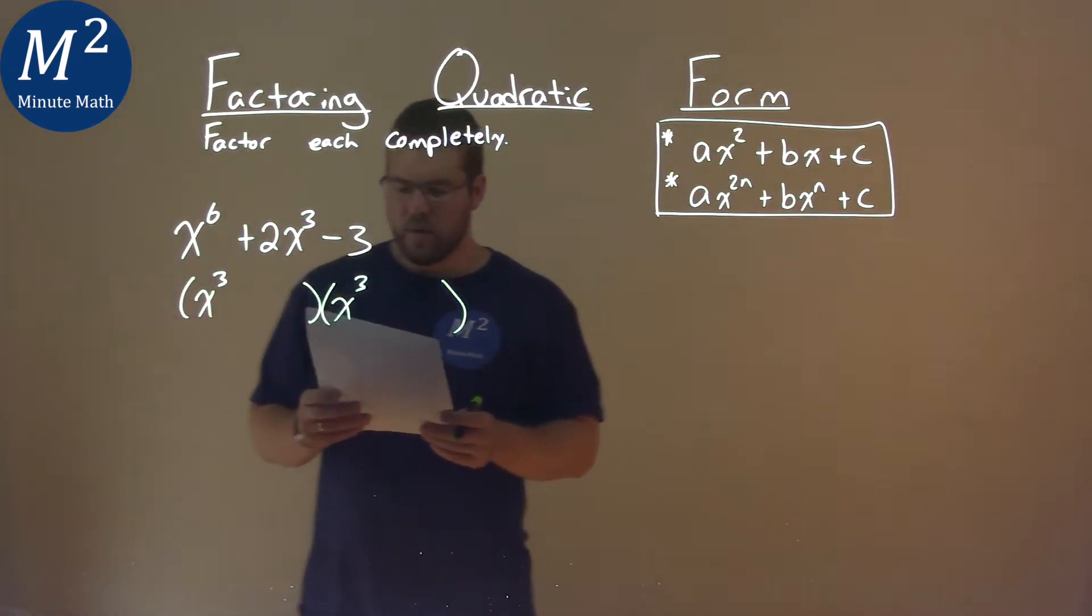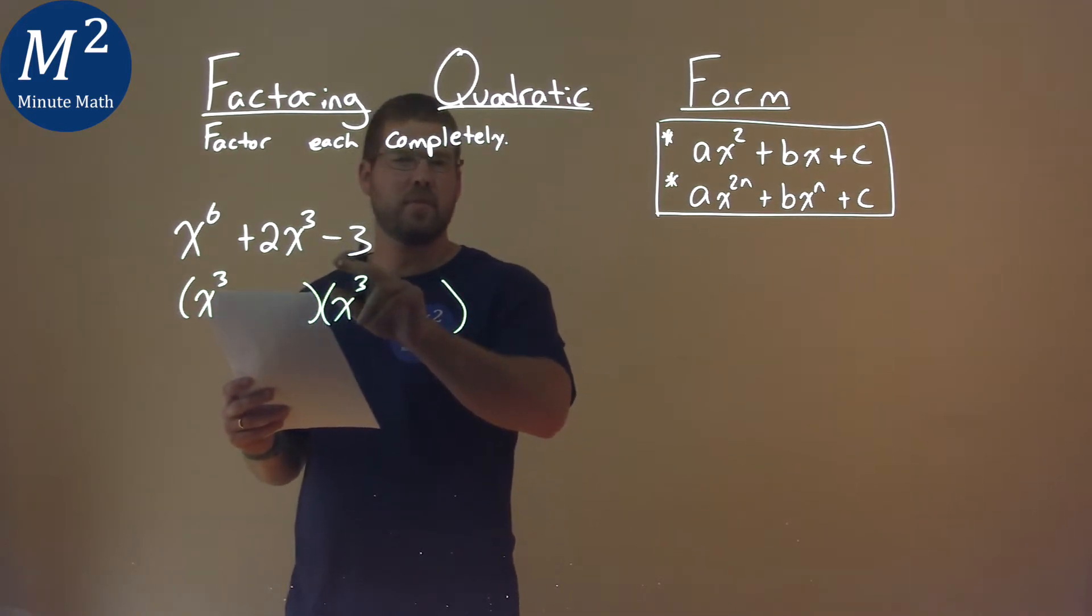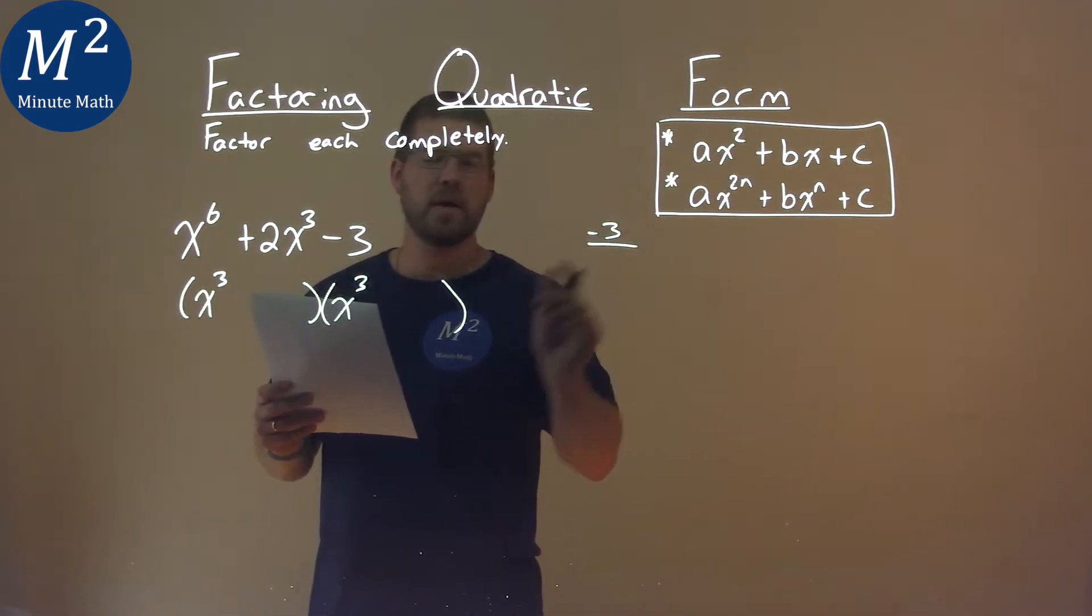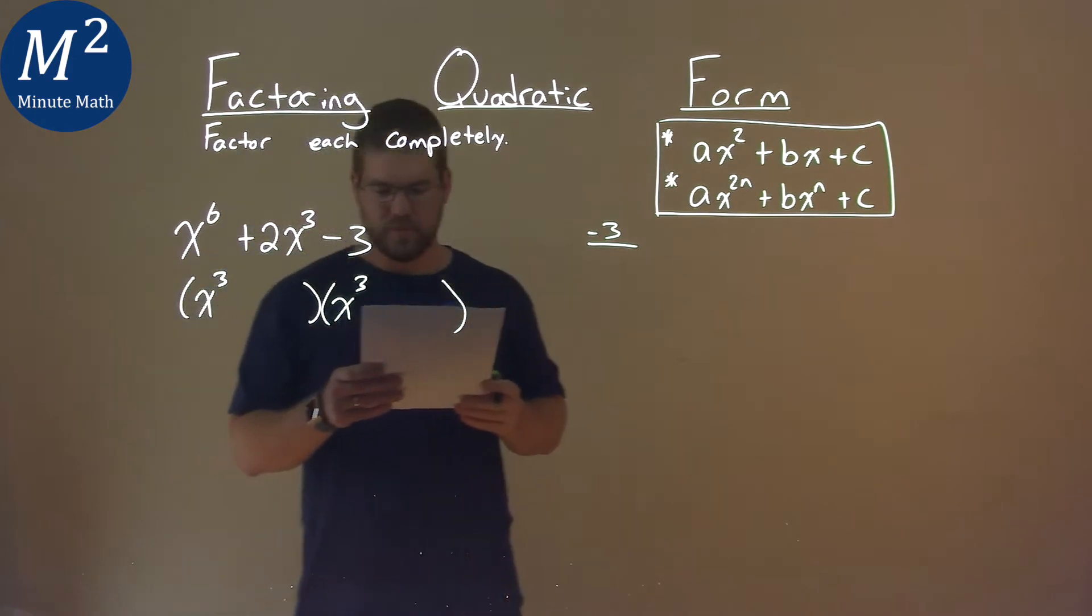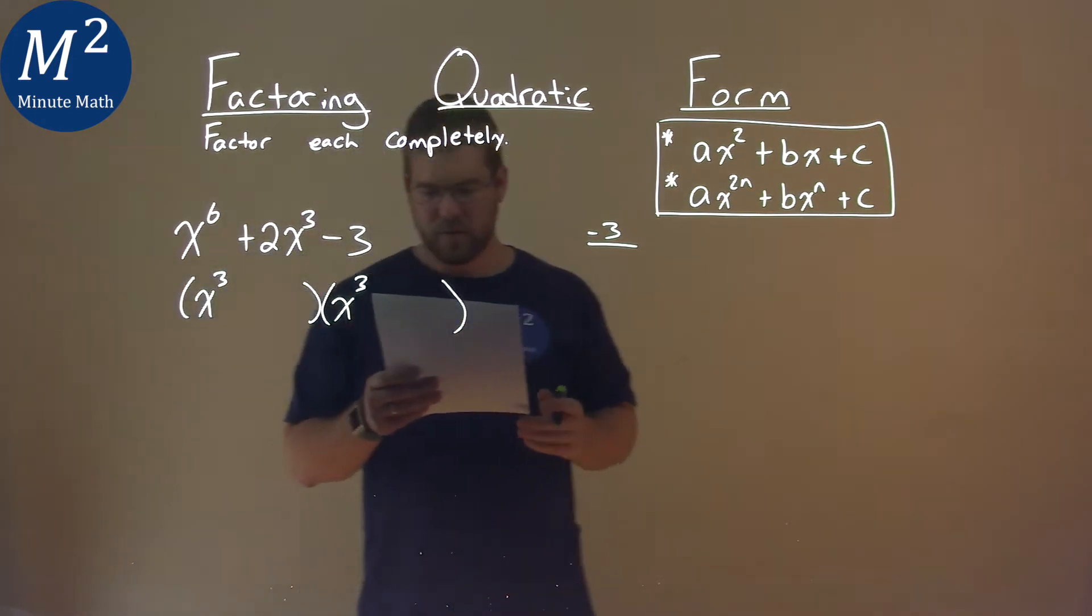And so now, I need to ask myself, what's the c-value? It's negative 3, and our b-value is positive, okay? With b-value being positive, c-value is negative 3.